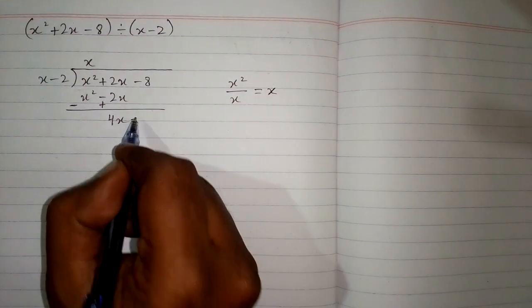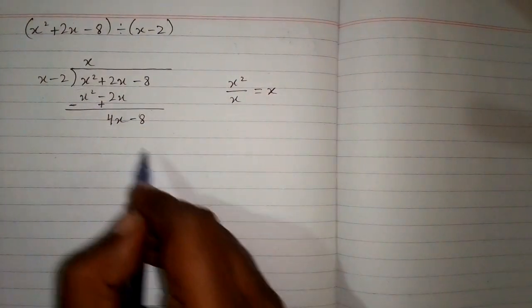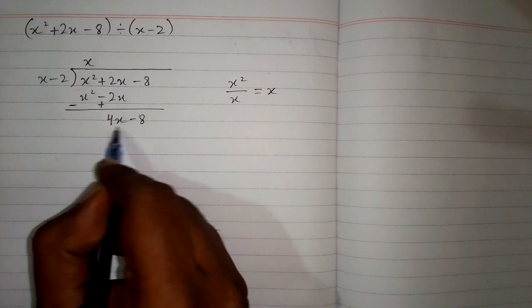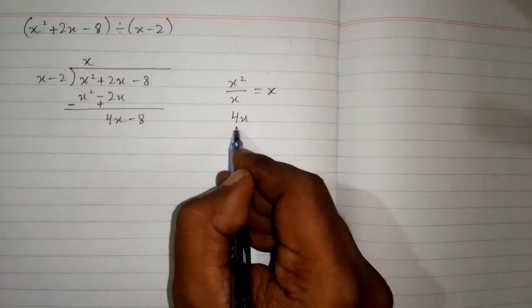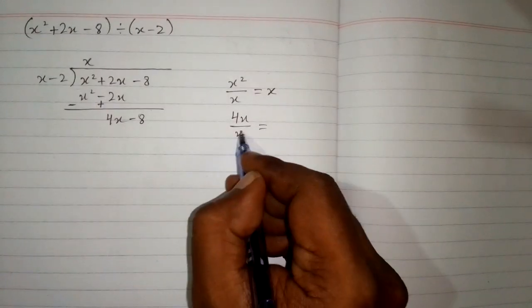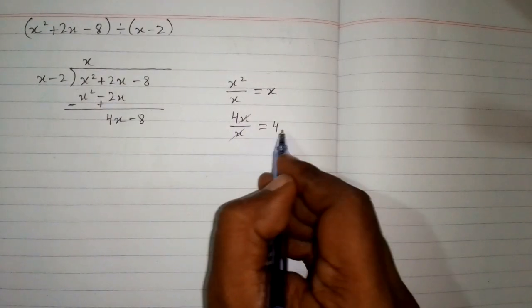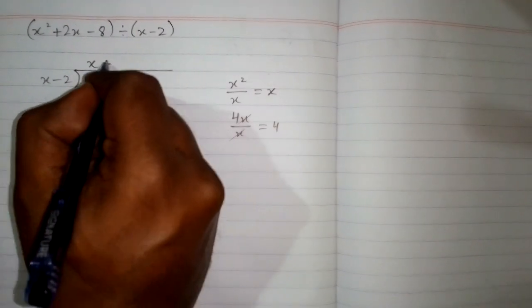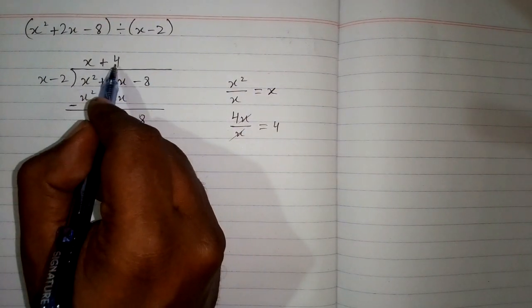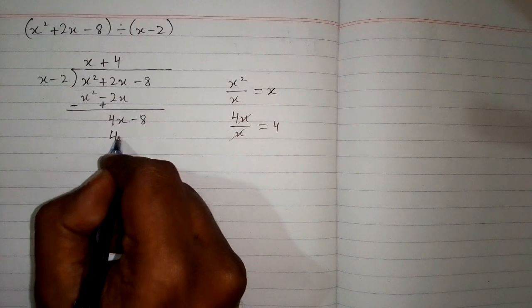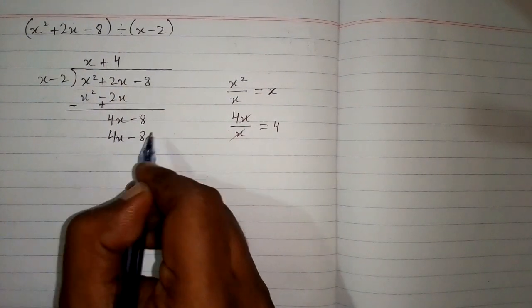Now we will write minus 8 over here and then take the first term of this polynomial which is 4x and the first term of the divisor which is x, and after cancellation we have 4. Now we write this 4 over here and multiply x minus 2 by 4. So 4 times x is 4x and 4 times minus 2 is minus 8.